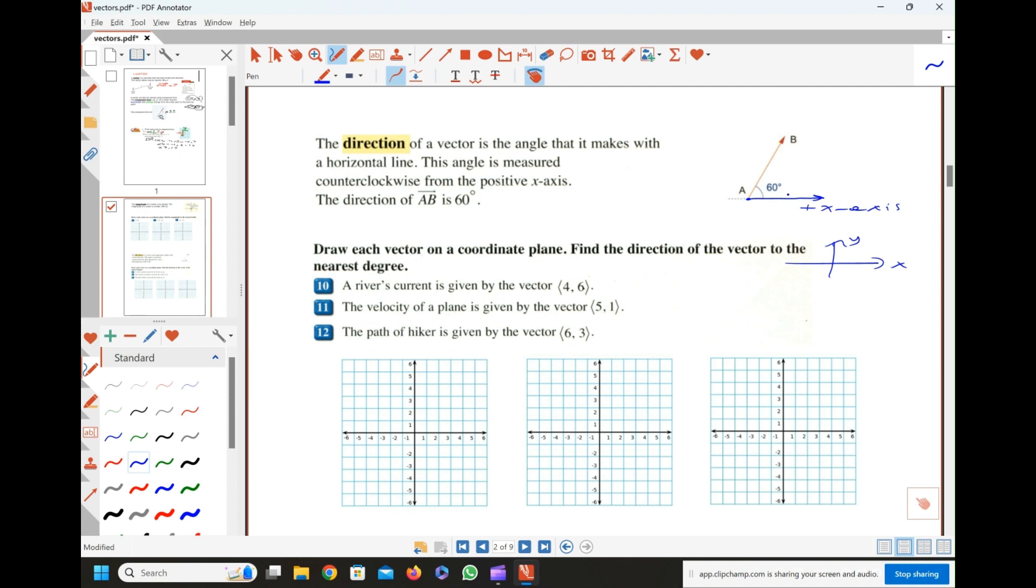So the angle formed between positive x-axis moving in the counterclockwise direction up to the vector, so this is your angle. That angle will give you the direction. Finding direction means finding the angle formed between positive x-axis and the vector. This is how you find the angle.